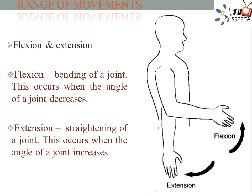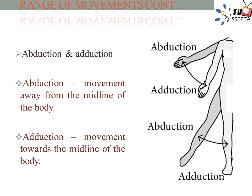Extension: straightening a joint — this occurs when the angle of a joint increases, for example at the elbow when putting a shot. Abduction: movement away from the midline of the body — this occurs at the hip and shoulder joints during a jumping jack movement. Adduction: movement towards the midline of the body — this occurs at the hip and shoulder, returning the arms and legs back to their original position from a jumping jack movement.